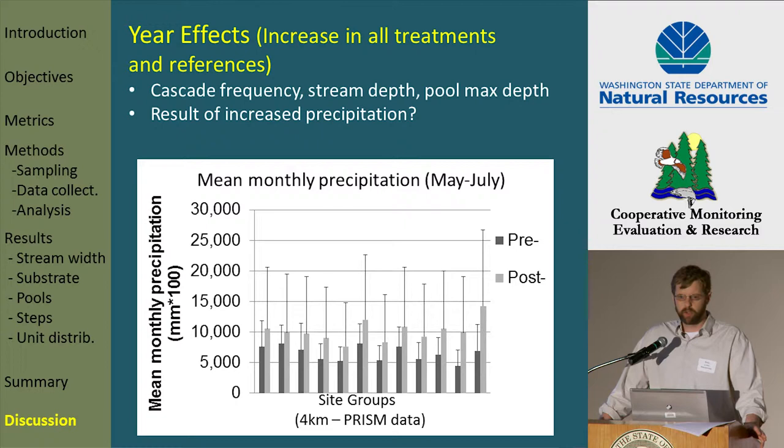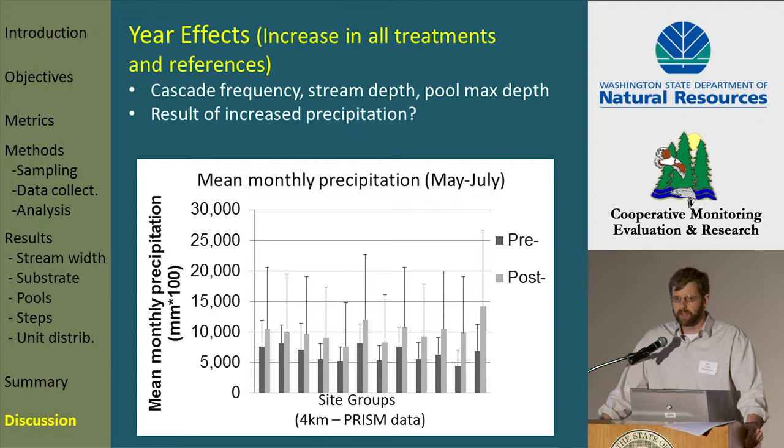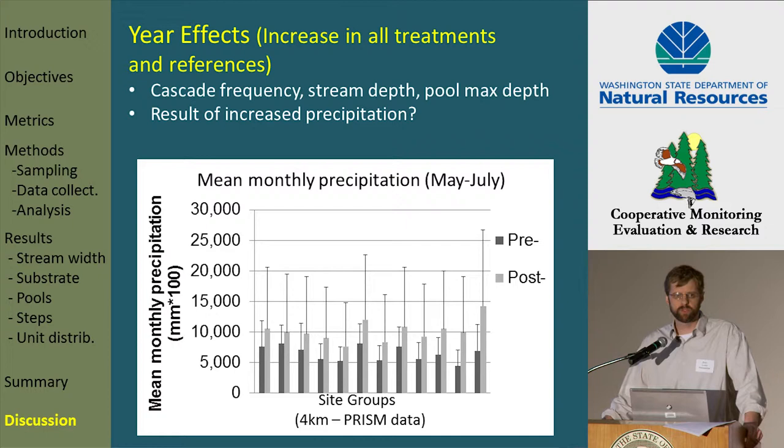There appears to be a year effect for several of our metrics — an increase all across the board, in all of the treatments as well as the reference. That was the case for the frequency of cascades, average stream depth, and average pool maximum depth. We're speculating that that may very well have been a result of increased precipitation during the three-month period where these surveys were being conducted.